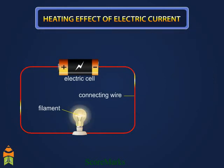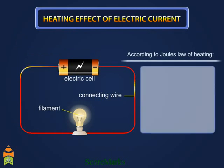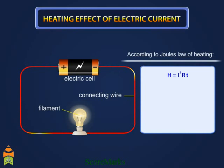When electric current flows through a wire, the wire gets heated. This is called the heating effect of electric current. According to Joule's law of heating, H is equal to I squared R T.